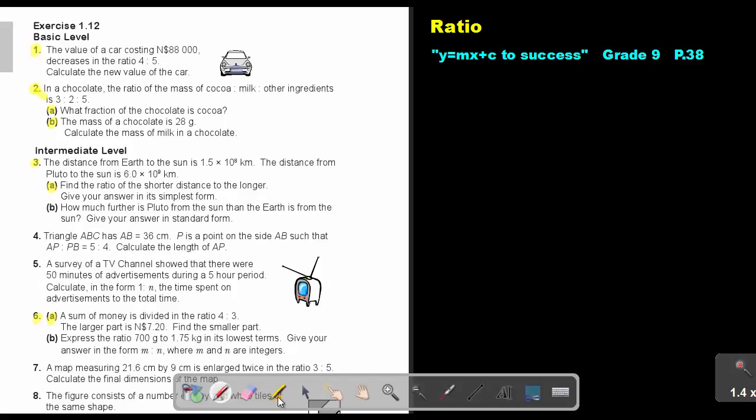Before we're going to start doing it, we're first going to classify it in the four groups. So let's start with the first one. The value of a car costing 88,000 decrease, there's the key word, in the ratio 4 to 5. Calculate the new value of the car. Can you remember increase, decrease? That was method three. In a chocolate, the ratio of mass of cocoa, milk, and other ingredients is 3 to 2 to 5. What fraction of the chocolate is cocoa? The mass of the chocolate is 28 gram. Calculate the mass of milk. So this is definitely that division into a given ratio. And that was number two.